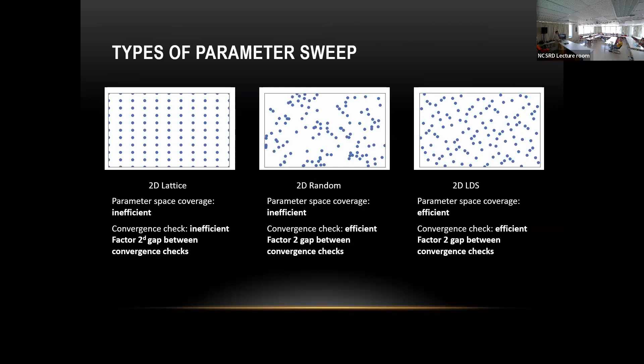One problem with the parameter sweep is, as you increase the number of parameters, you have a curse of dimensionality. The number of points using a traditional lattice grows proportional to 2^d, where d is the dimension. So it increases rapidly with dimension. You can use a random sample, and you do a convergence check to see if you've done enough simulation.